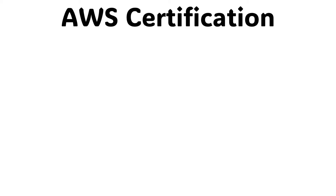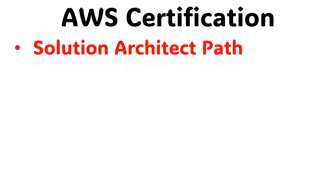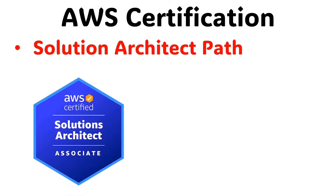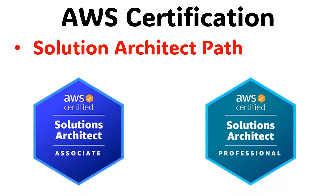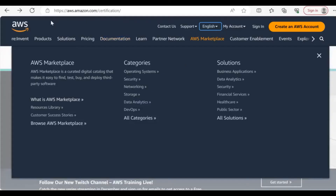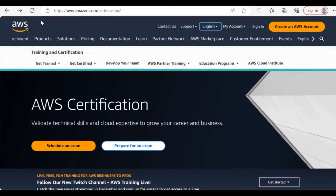In the AWS Certification for Solution Architect path, there are two levels of certification: Solutions Architect Associate and Solutions Architect Professional. The first step is to register for the certification exam. For this, refer to the website aws.amazon.com/certification.